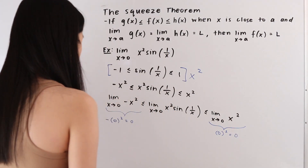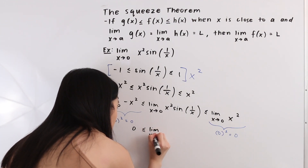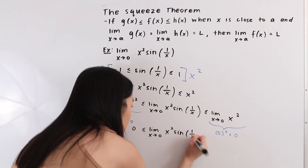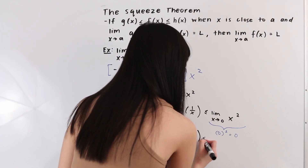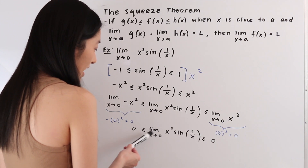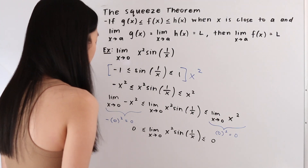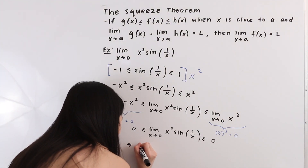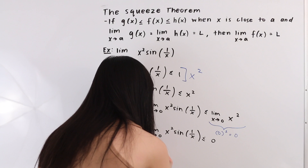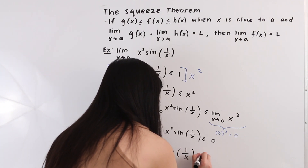We can now rewrite this inequality as: 0 ≤ the limit as x approaches 0 of x² sin(1/x) ≤ 0. This tells us that the limit is bounded between 0 and 0, and therefore we can conclude that the limit as x approaches 0 of x² sin(1/x) is equal to 0.